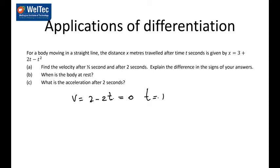What is the acceleration after 2 seconds? The acceleration is the derivative of velocity, so it's negative 2. That means it's actually a constant acceleration, so no matter what the time is, the acceleration is going to be negative 2 meters per second squared.